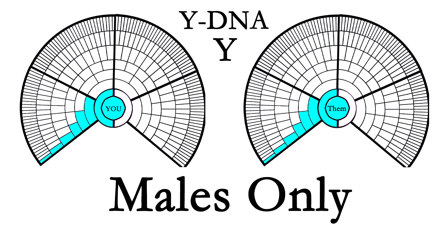I'm going to state for the record: Y-DNA is just as accurate as autosomal — no more, no less. When you match somebody on a Y-DNA test, yes, you've proven that you match that person. But autosomal does that too. The issue is: they've got their tree and it says their sixth great-grandfather on the paternal line is Bob — how accurate is their record? It's about as accurate as any other tree on Ancestry. It's a misconception that the Y-DNA test magically opens doors because it's more accurate.